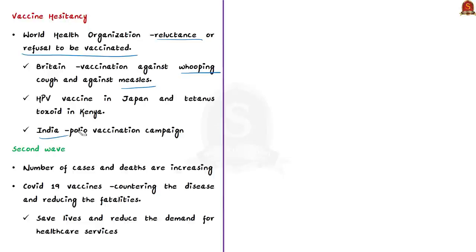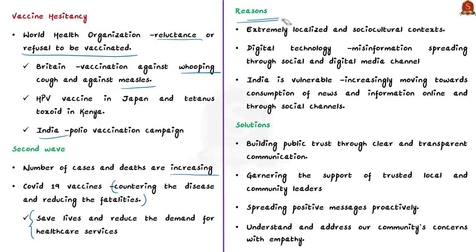India is now seeing a second wave of COVID-19, with cases and deaths increasing day by day. At this juncture, COVID-19 vaccines can play a major role in countering the disease and reducing fatalities, saving lives, and reducing demand for healthcare services at government and private facilities. Yet despite such direct and indirect benefits, many are still hesitant to accept these life-saving scientific interventions. So why are people hesitant to accept vaccines?